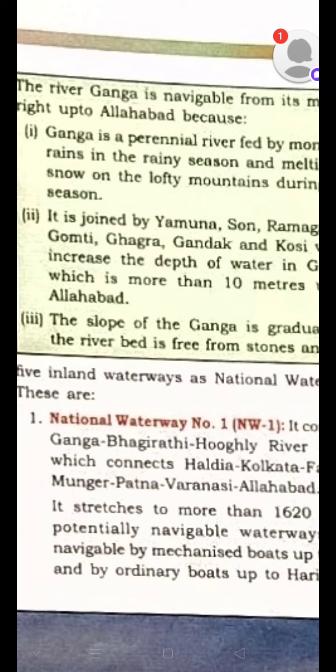Ganga is a perennial river — snow-fed and also fed by monsoon rains. During the dry season, it is joined by many tributaries: Yamuna, Son, Ganga, Gomti, Ghaghra, Gandak, and Kosi. The river is very wide and deep, the slope is gradual, and the river bed is free of stones and silt — unlike the peninsular rivers.